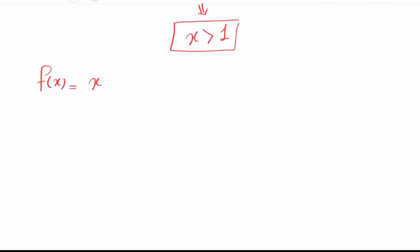Now we define f of x as x to the x minus 4, where x is greater than 1. Obviously f of x equals e to the x times ln of x minus 4.